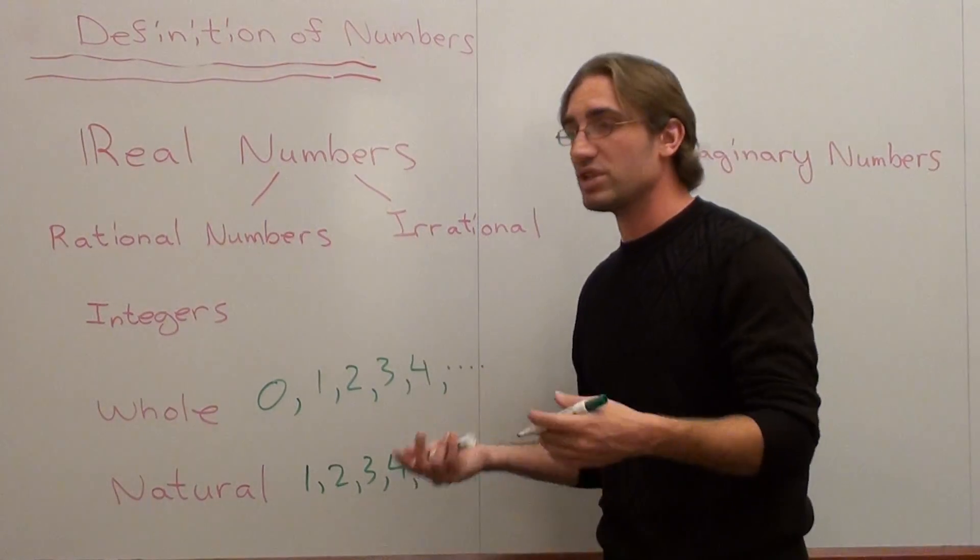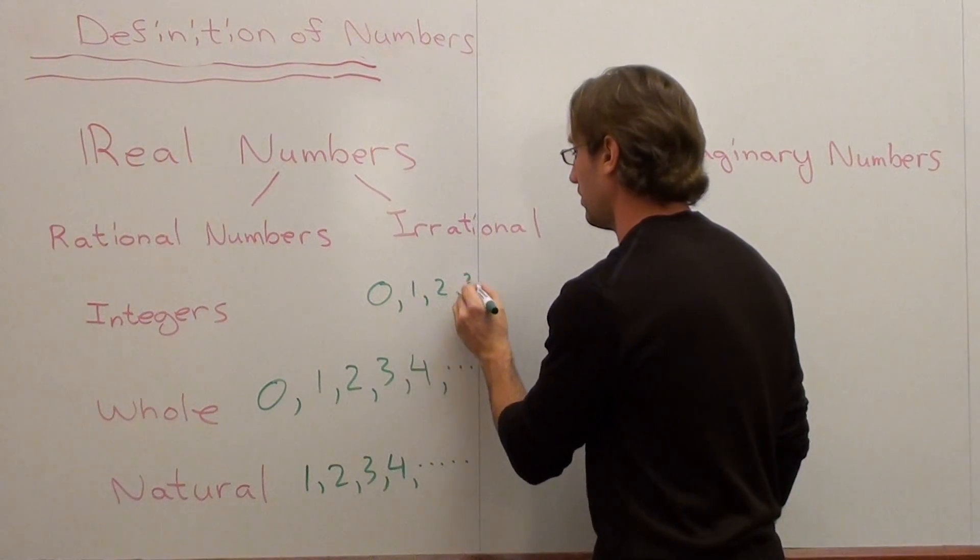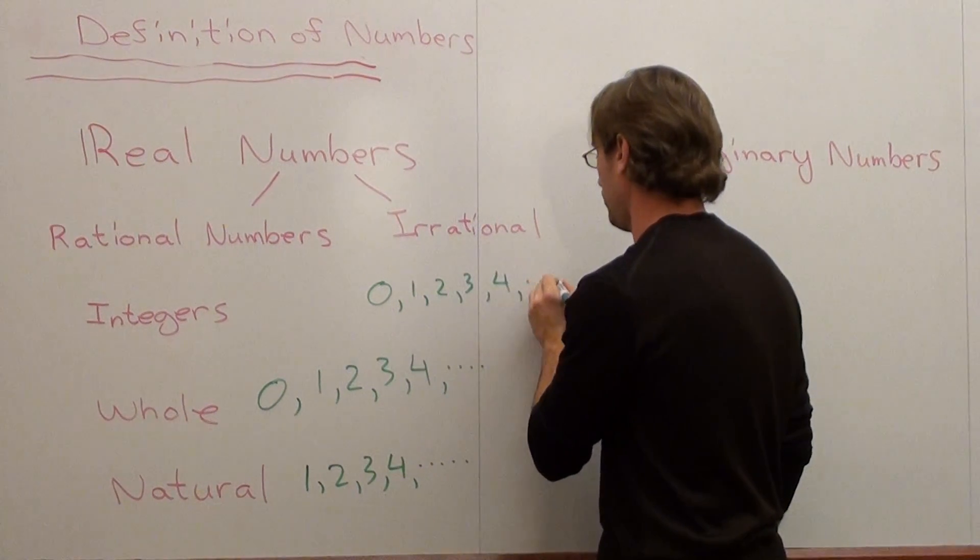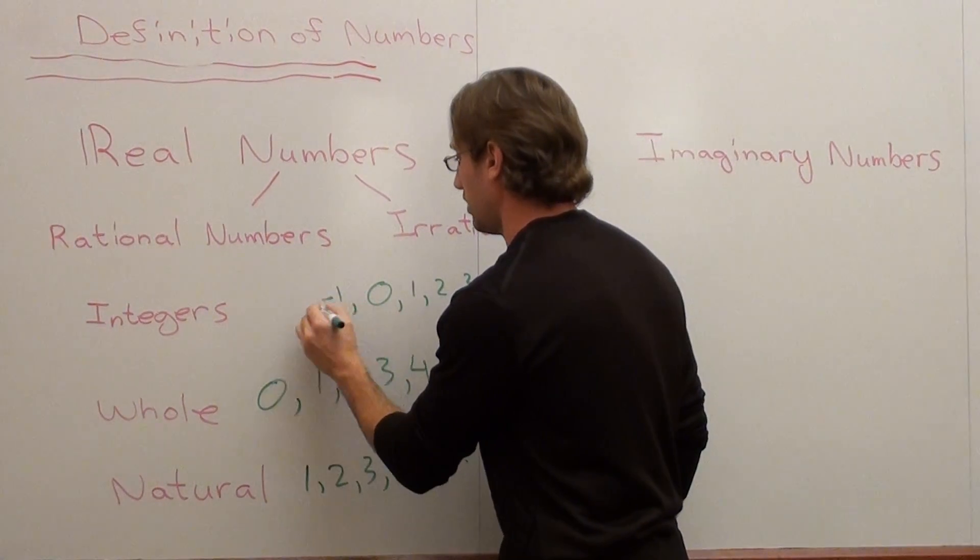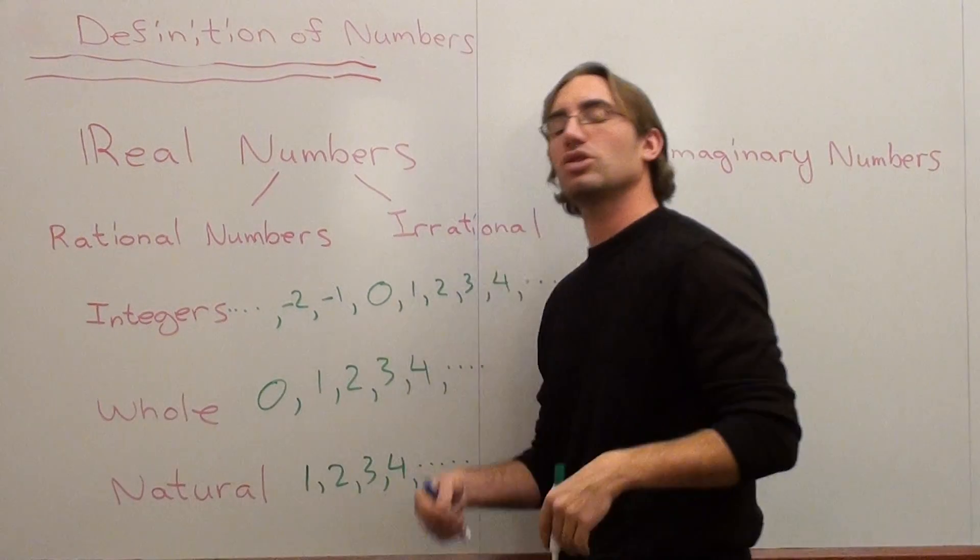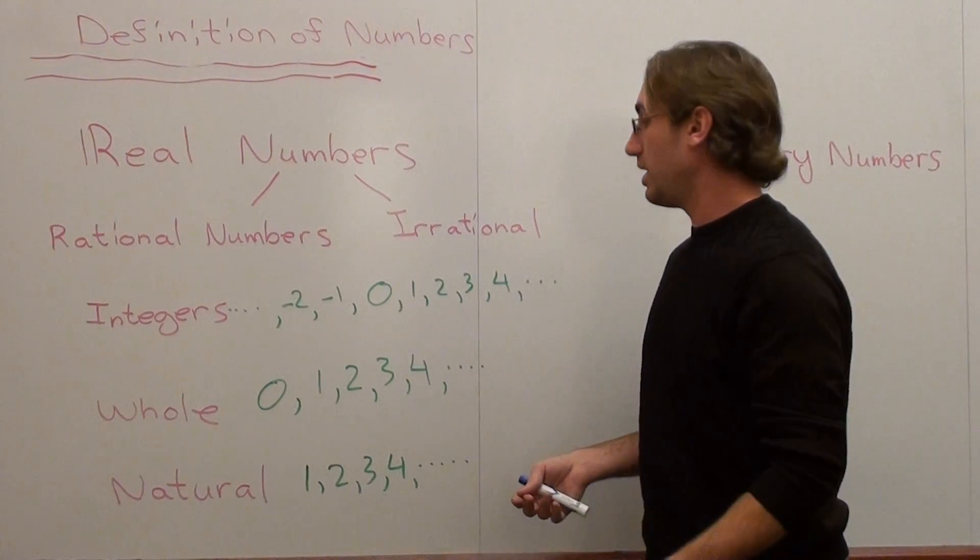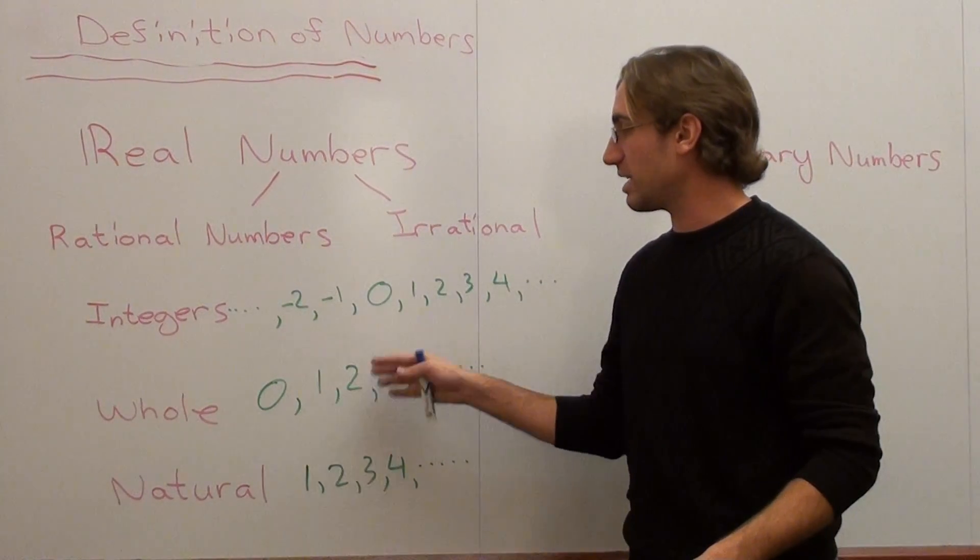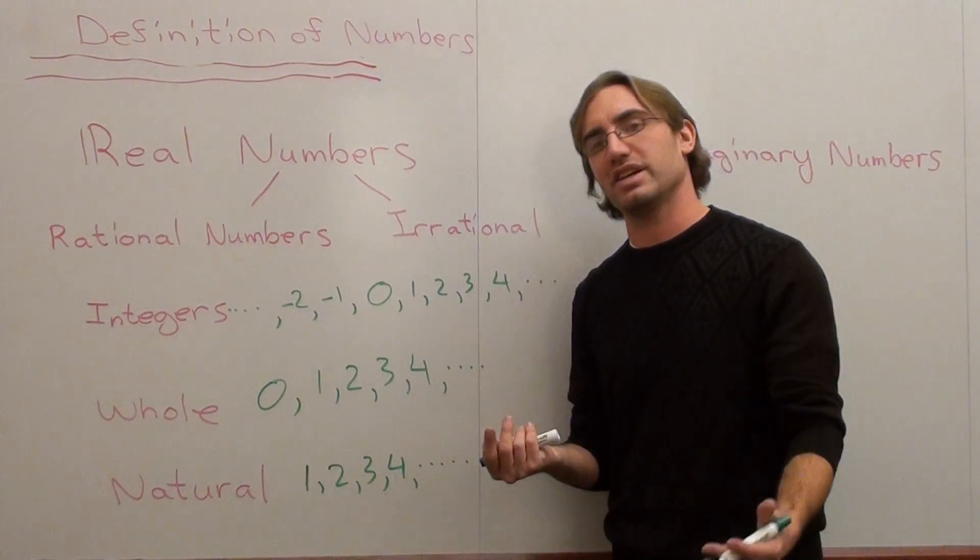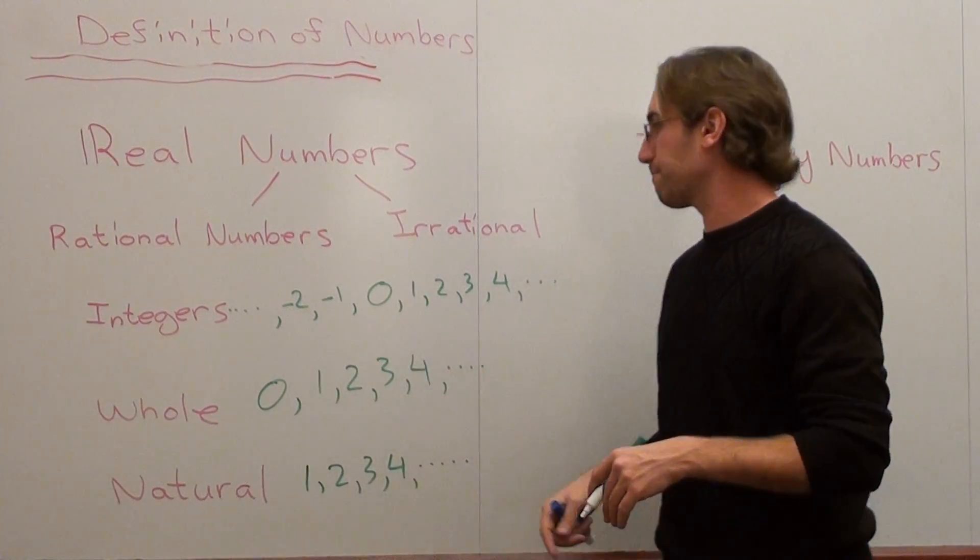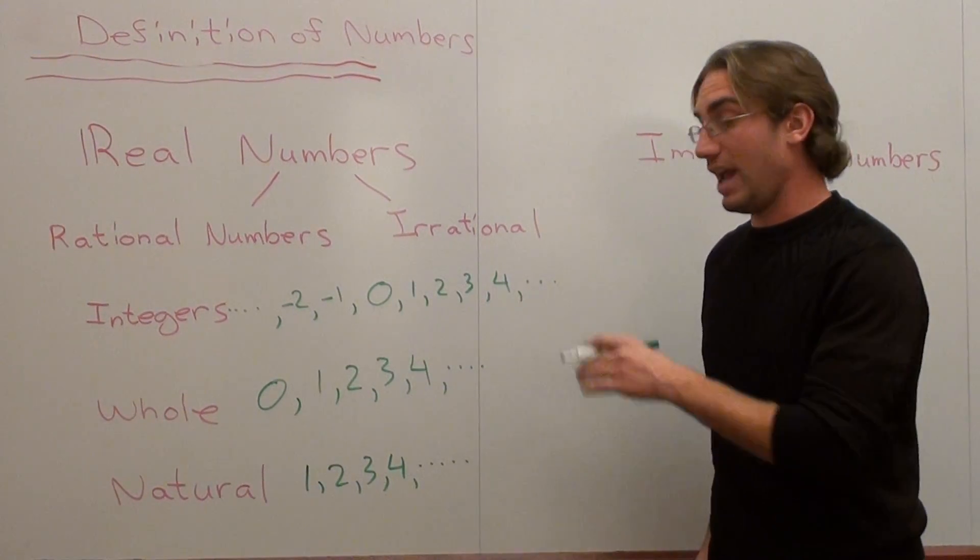Integers are very similar to whole numbers and natural numbers with an exception. I don't see the difference yet. But they also include negative 1, negative 2, negative 3, negative 4, negative 5, negative 6, and so on. So it's just like whole numbers except now they have the negative natural numbers too. That's basically where I'm getting. It's like whole numbers and natural numbers except it also includes the negatives.